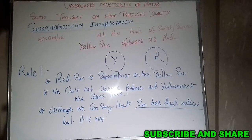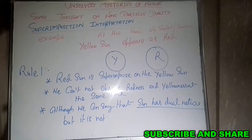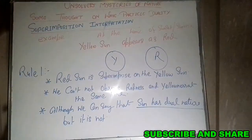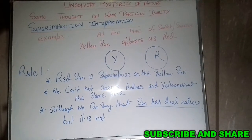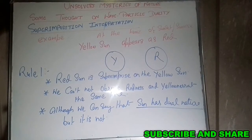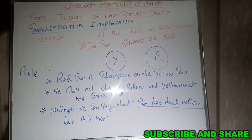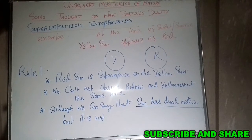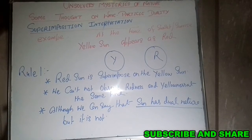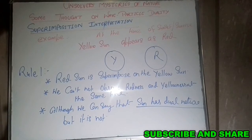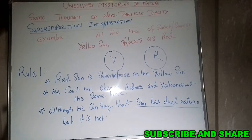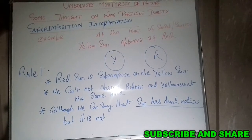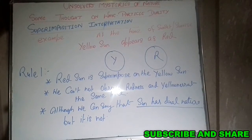Now there can be another interpretation of quantum mechanics, which is called the superimposition interpretation. Take an example: at the time of sunset or sunrise, the yellow sun appears as red. We can say that the redness of the sun is superimposed on the yellow sun. Fact one. Fact two: we cannot observe redness and yellow at the same time — there is no way to see both the red sun and yellow sun simultaneously. If one has to appear, the other has to go. So we might say the sun has a dual nature, but it does not.